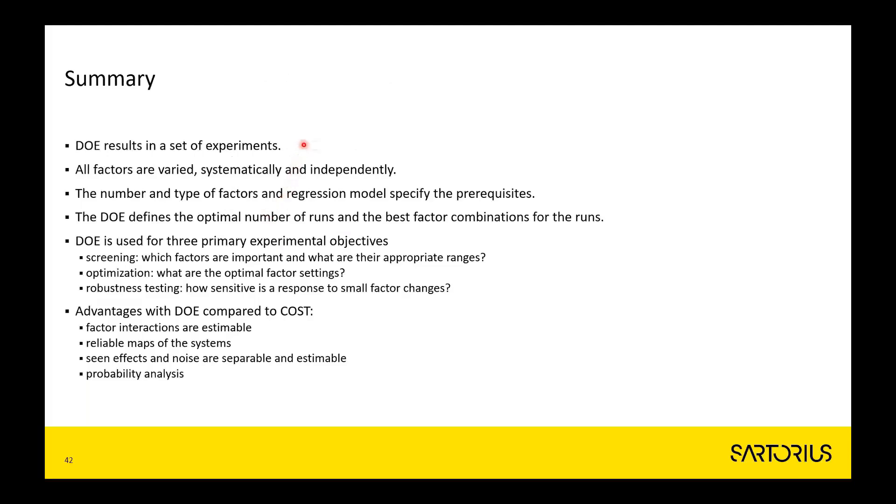DOE results in a set of experiments where all factors are varied systematically and independently. The number and type of factors and the regression model you want to have specify what experiments have to be done. A DOE worksheet defines the optimal number of experiments that you need to do and the best combination of the factors for these experiments. DOE can be used for many experimental objectives: screening, optimization, robustness verification, and system characterization. Above all, the most important advantage of DOE compared to COST is that we can estimate all factors and their higher orders in a reliable way, and we're not fooled to draw erroneous conclusions.